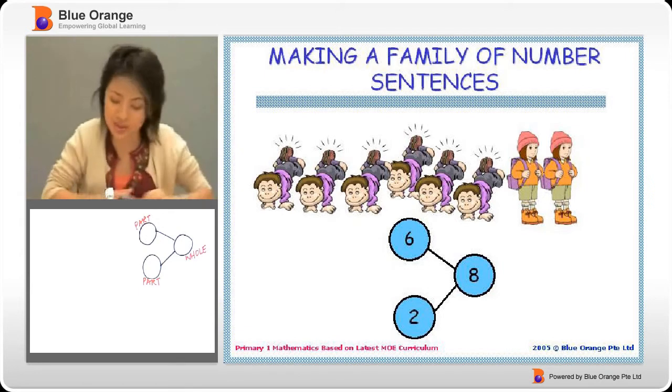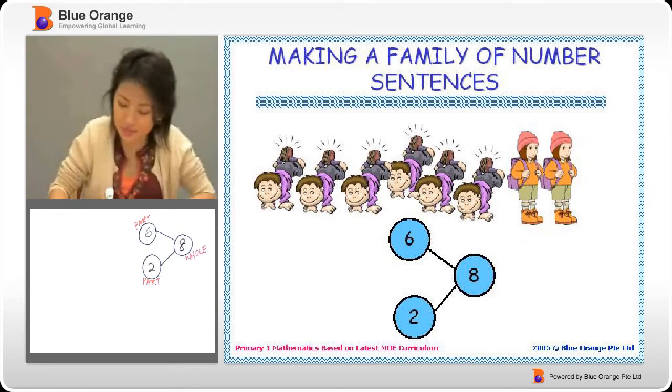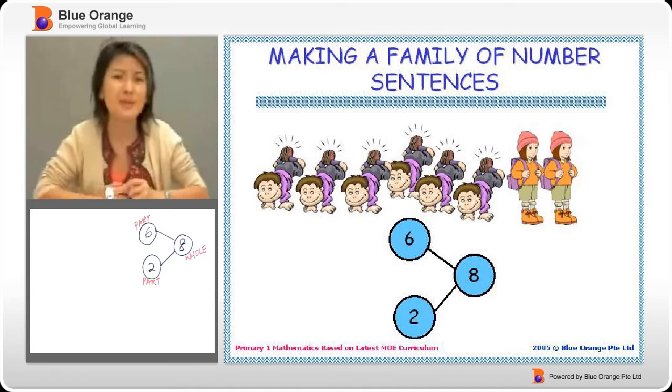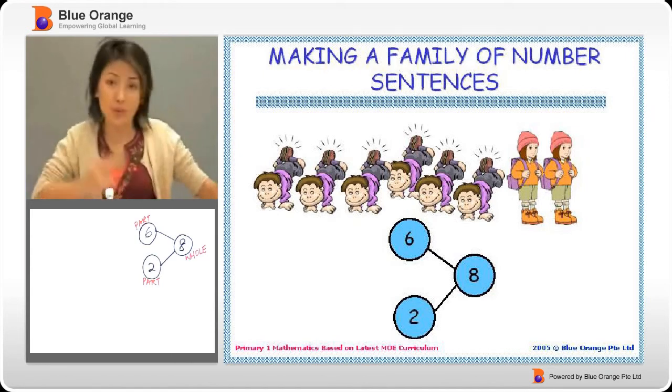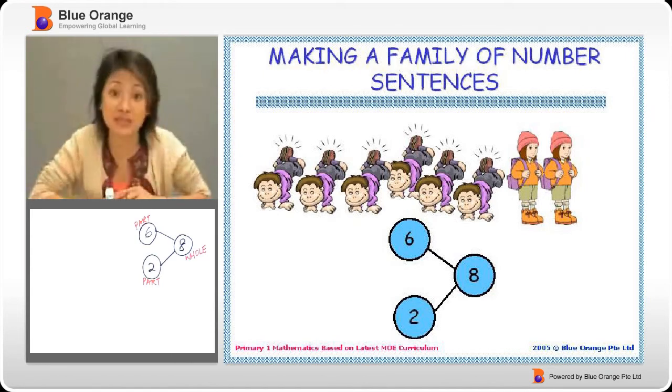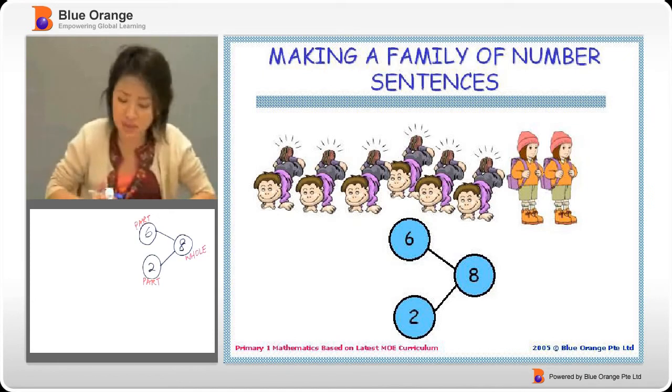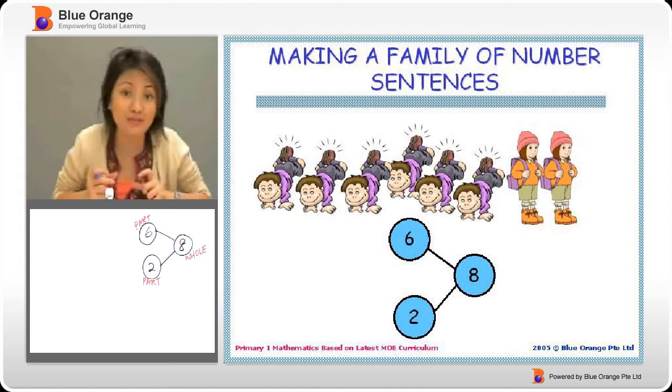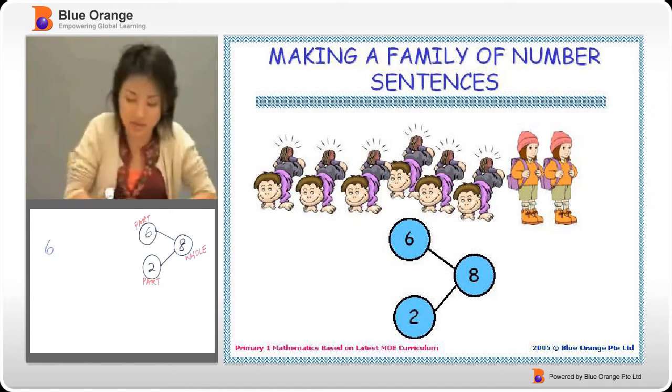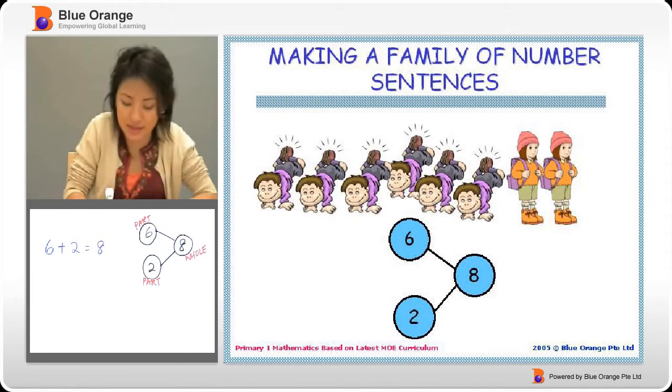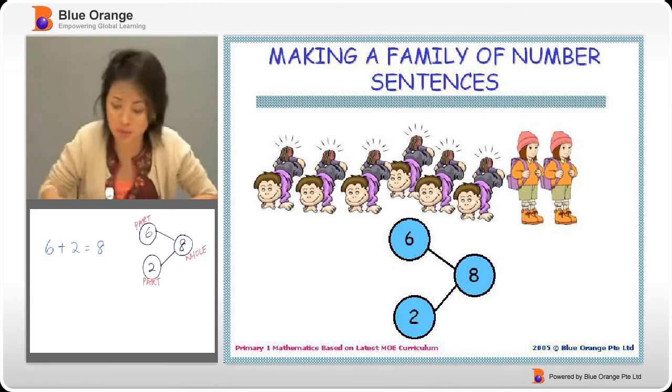Now how are we going to use these numbers to help us write number sentences? We can think in terms of addition first, since we're very good at addition. So here we can say that two small parts make the big part. So we can say six plus two will give us eight. The two small parts will give us one big part.